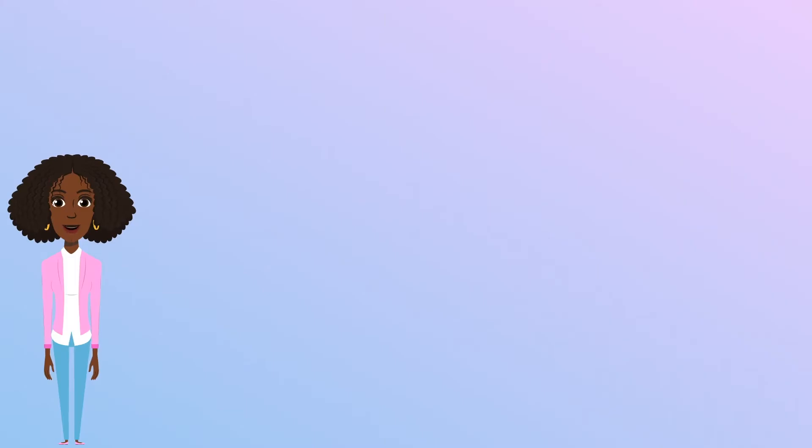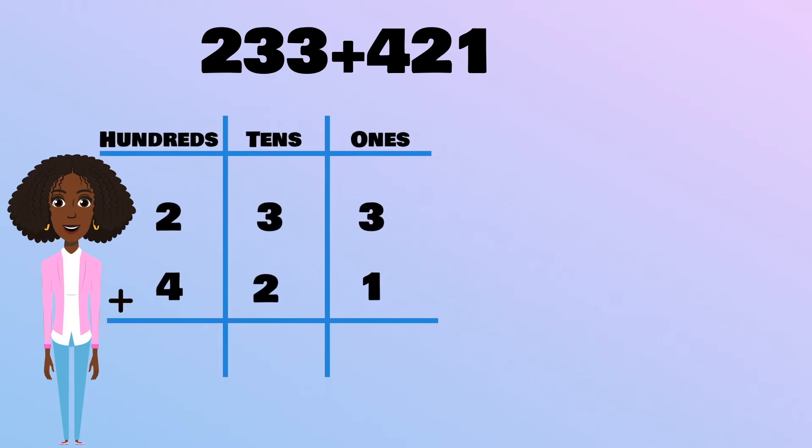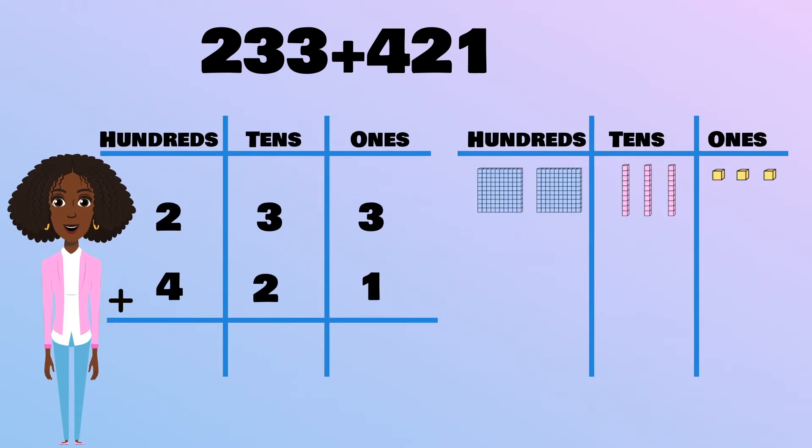First, I'll show you how to add three-digit numbers using an example. Let's start with the equation 233 plus 421. I'll line up these numbers in a place value chart and model them with base 10 blocks.